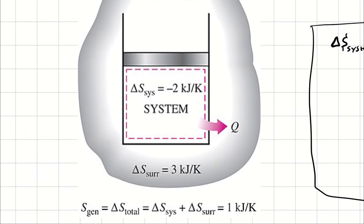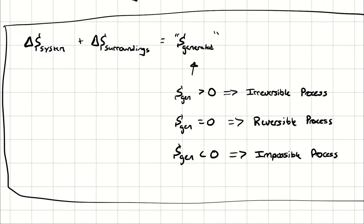If you consider a situation where you have a system undergoing a process and the entropy change within that system is negative two, that does not itself violate any laws — that's fine. You can have an entropy change that is negative. It just means that the entropy change somewhere else, the surroundings, must be greater than that in the opposite direction. So if the entropy change of the system was negative two, the entropy change of the surroundings must be at least two. If it was three, that means we have an irreversible process and S_gen would equal one.